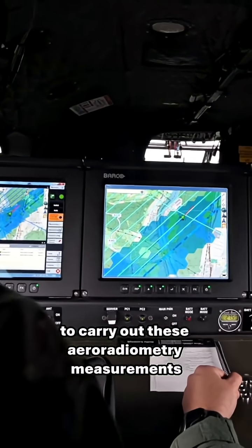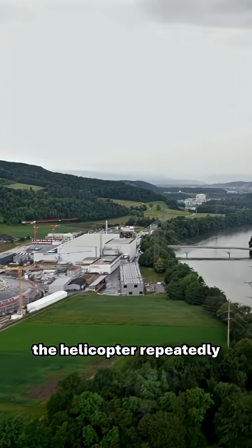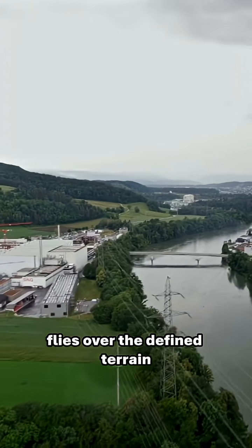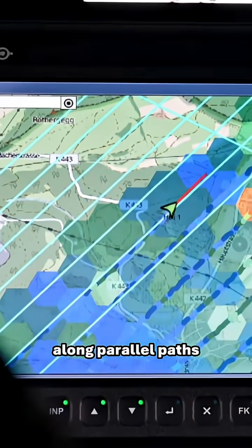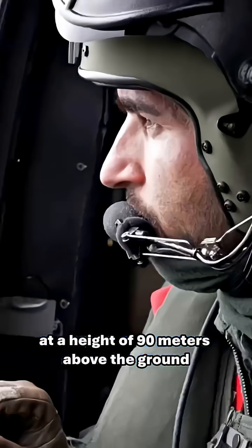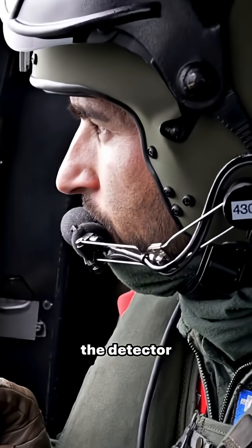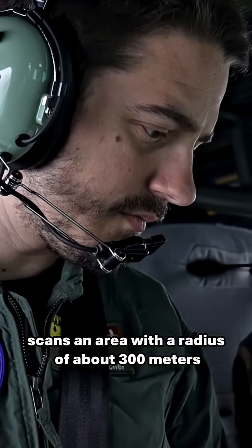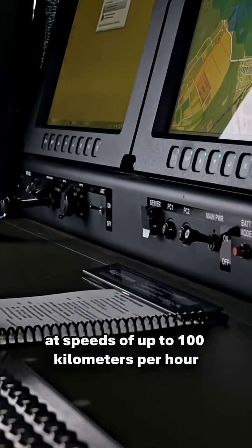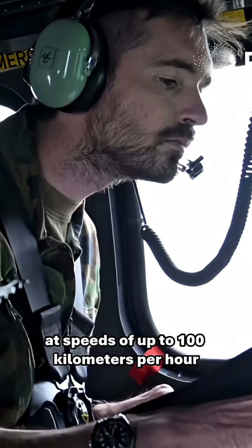To carry out these aeroradiometry measurements, the helicopter repeatedly flies over the defined terrain along parallel paths at a height of 90 meters above the ground. The detector scans an area with a radius of about 300 meters at speeds of up to 100 kilometers per hour.